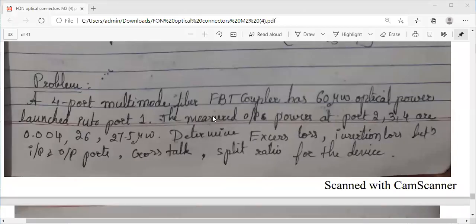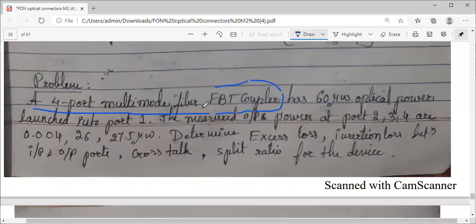So we were discussing the problem based upon the coupler. This is the problem statement: there is a four-port multimode fiber FBT coupler. This type of coupler has the input power applied at port one as 60 microwatts, and output powers are measured at each of these ports 2, 3, 4.